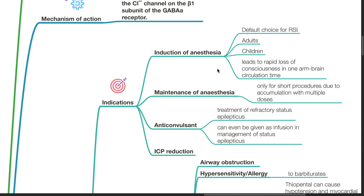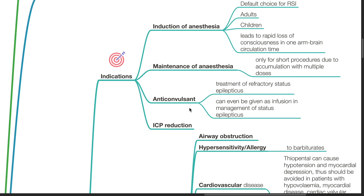Indications of thiopenthal include induction of anesthesia in adults and children. It is the default choice for rapid sequence induction and leads to rapid loss of consciousness in one-arm brain circulation time. It can also be used for maintenance of anesthesia for short procedures, due to risk of accumulation with multiple doses. It is a potent anticonvulsant used for treatment of refractory status epilepticus and can be given as an infusion during its management. It can be used to reduce intracranial pressure.